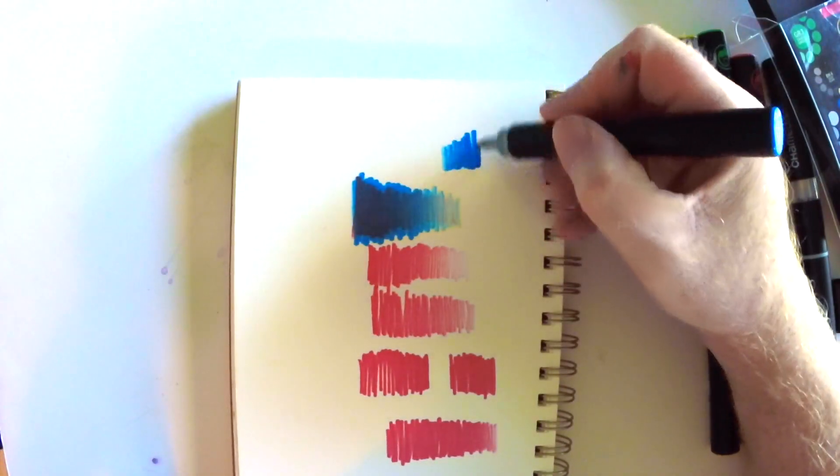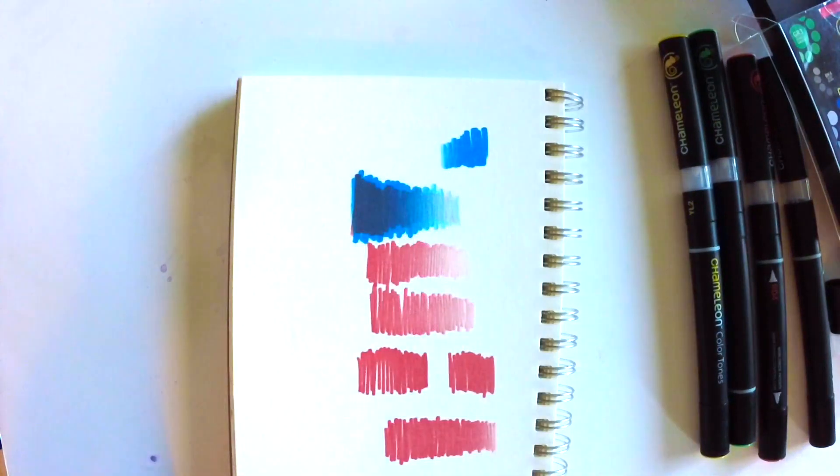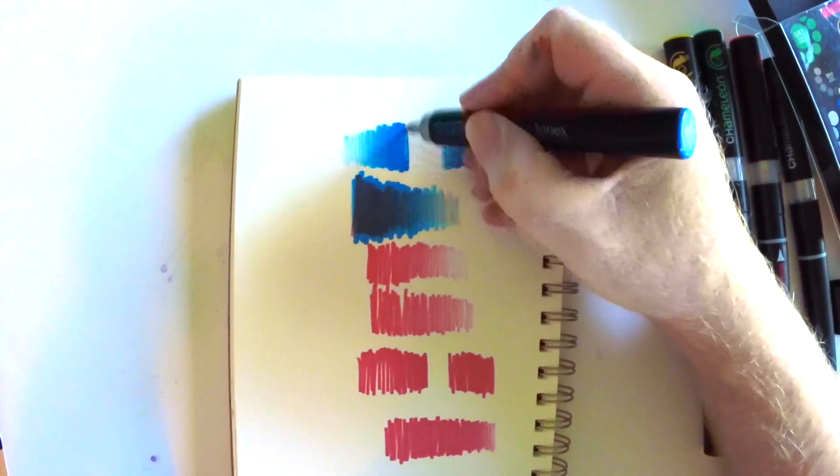So you place the nib in contact with that toning nib like I said, and then the longer you let it sit there, the lighter the tone is going to be when you start. And I repeat that several times because it's important that you sort of know how this works.